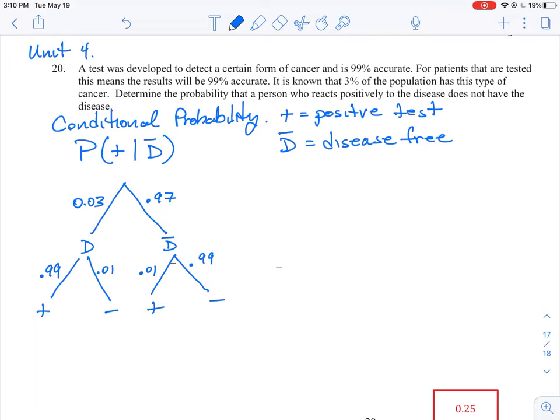So how do we calculate this particular compound probability? The probability of testing positive, given we don't have the disease, is basically given to you by this formula. It is the probability of testing positive and the probability of not having the disease.